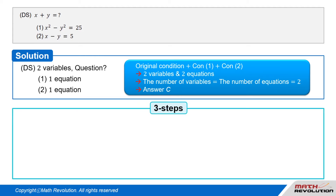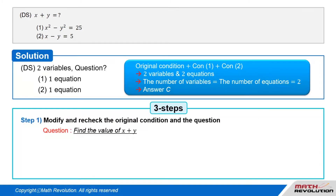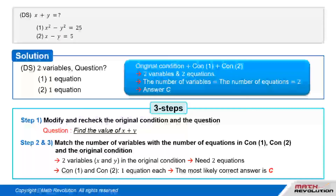Let's apply the three steps suggested previously. Follow the first step of the variable approach by modifying and rechecking the original condition and the question. We have to find the value of x plus y. From the original condition we have two variables, x and y. To match the number of variables with the number of equations, we need two equations. Since Conditions 1 and 2 will provide one equation each, C would most likely be the answer.